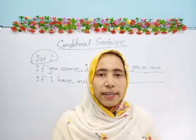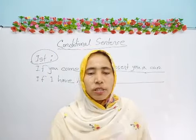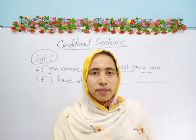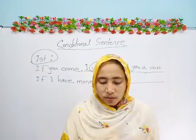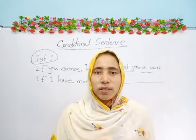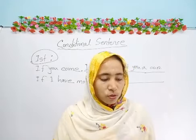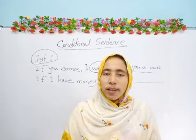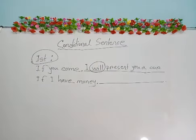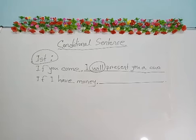Again I am showing you another example: if I have two birds - if I have two birds - then what will be the next part? The next part is: I will give you one bird. So the first part is 'if I have two birds,' then 'I will present you one bird.' Learners, like this way we can complete our conditional sentence.